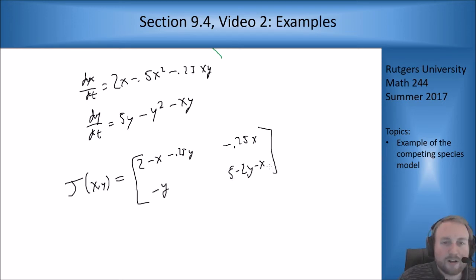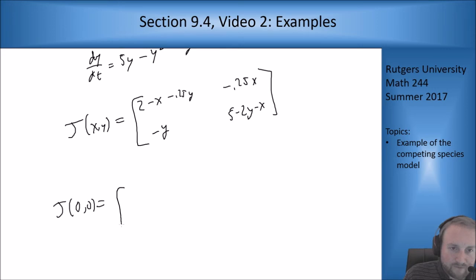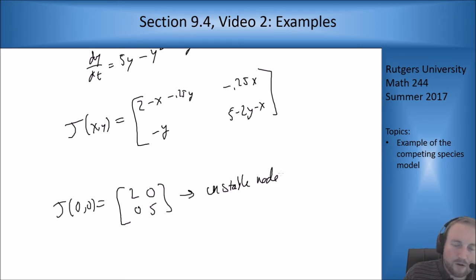Let's check our various critical points. At (0, 0), J(0, 0) is the matrix [2, 0; 0, 5]. This is an unstable node, which is what we wanted to see from that.